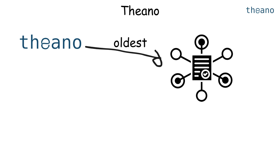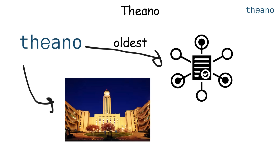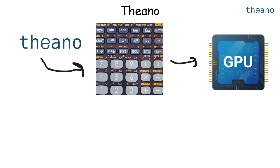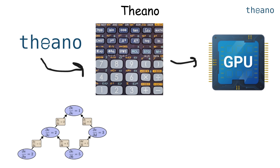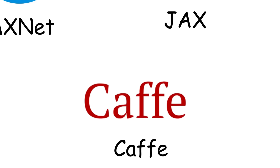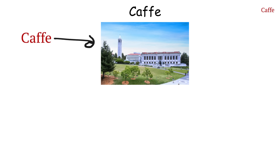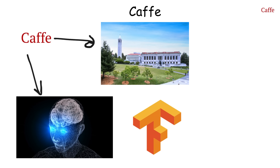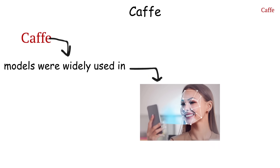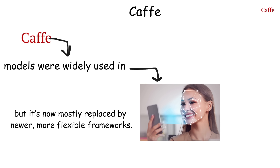Theano is one of the oldest deep learning frameworks, developed at the University of Montreal. It laid the foundation for many later frameworks, including Keras, and introduced the idea of defining computation graphs for fast GPU-based mathematical computation. Although it's now discontinued, it remains a huge part of deep learning's history. Caffe was developed at UC Berkeley and was extremely popular for computer vision tasks before TensorFlow and PyTorch dominated. Known for speed in image classification and recognition thanks to its efficient C++ backend, Caffe models were widely used in early image recognition research, but it's now mostly replaced by newer, more flexible frameworks.